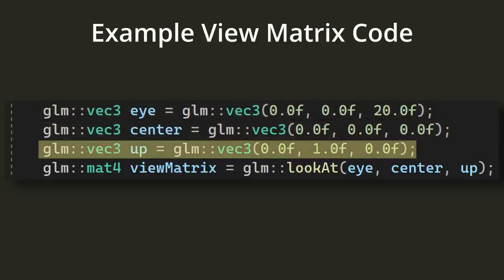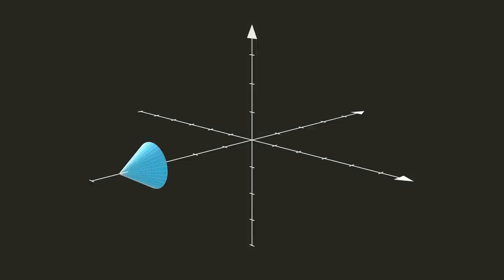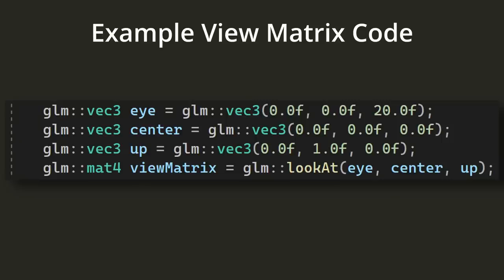If I say point the camera at the center and make sure the global up vector is pointing towards the sky, then there's only one possible orientation for our camera. We can give GLM these three vectors and it does some magic to give us a proper view matrix.